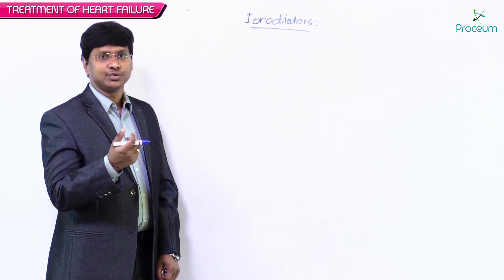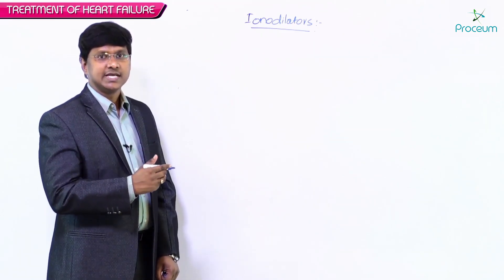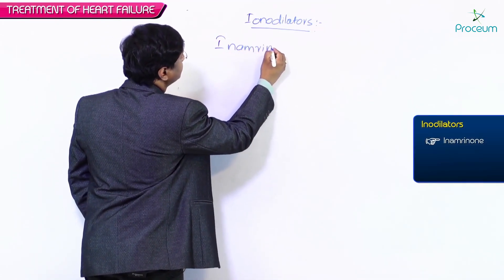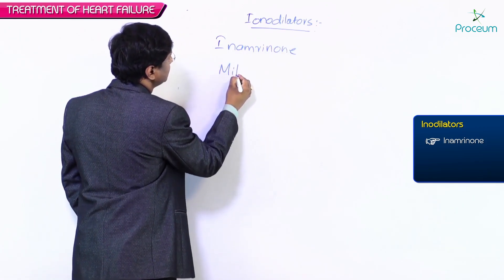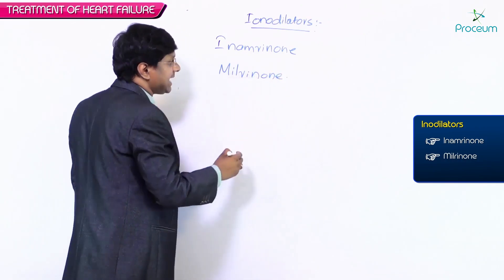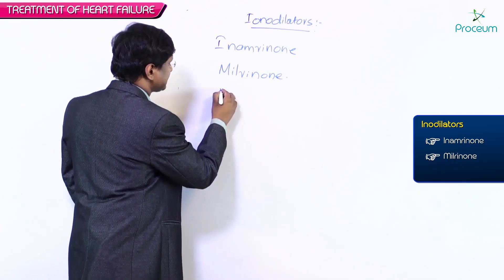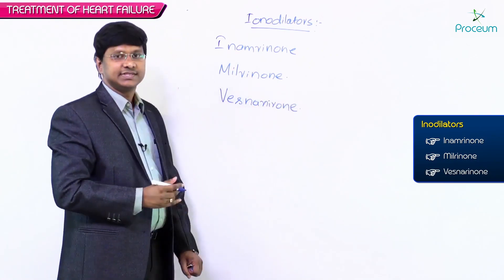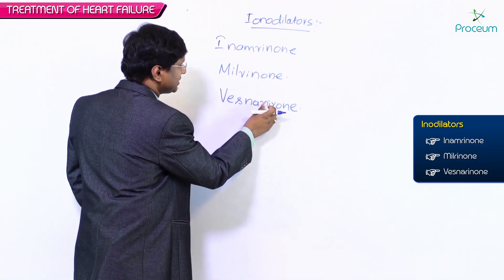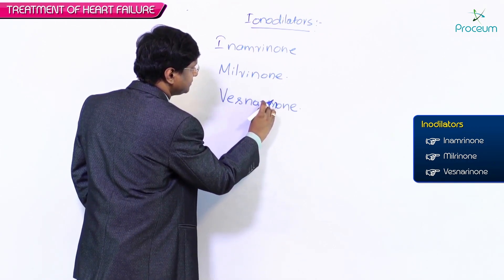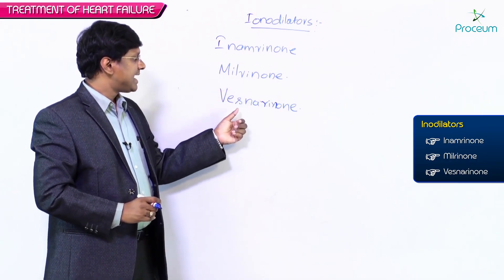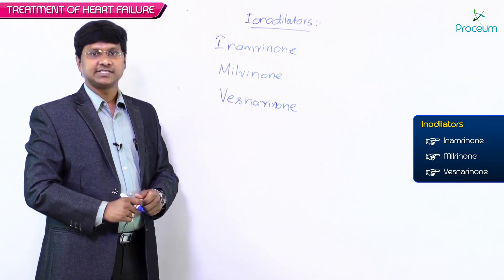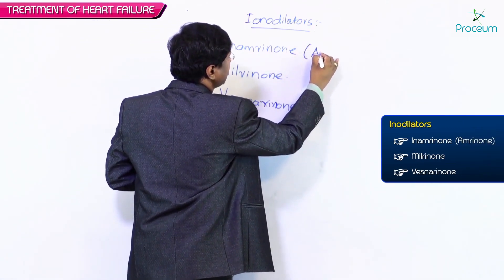The drugs in the inodilators group include inamrinone, milrinone, and vesnarinone. There is another name for inamrinone which is called amrinone — previously it was called amrinone.